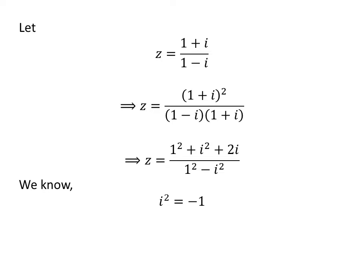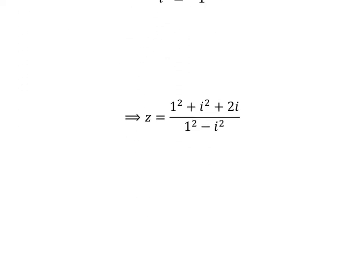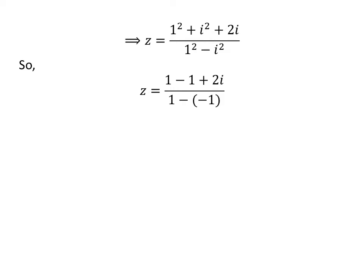We know that i² equals -1. So, application of this fact gives us z equals (1 - 1 + 2i)/(1 - (-1)). Further simplification gives us z equals i.